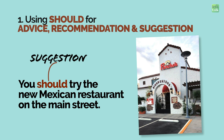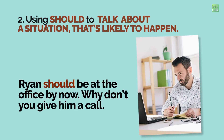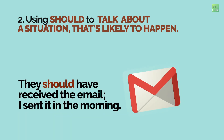Why don't you write some sentences for each one of them? I would love to read your comments. The second use of Should is to talk about a situation that is likely to happen in the present or near future. 'Ryan should be at the office by now — why don't you give him a call?' Here you are predicting that Ryan will be in the office anytime soon. 'They should have received the email — I sent it in the morning.' Again, you are sure that they have received the email.